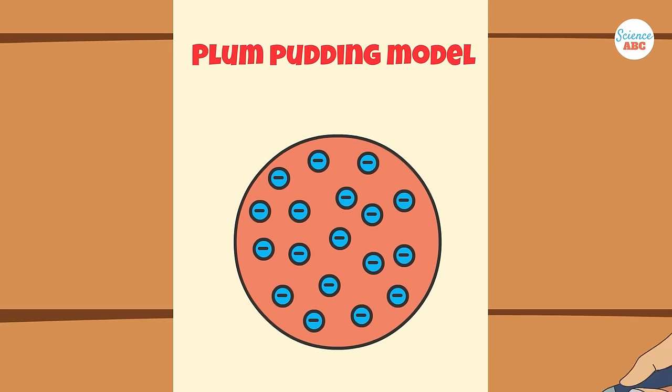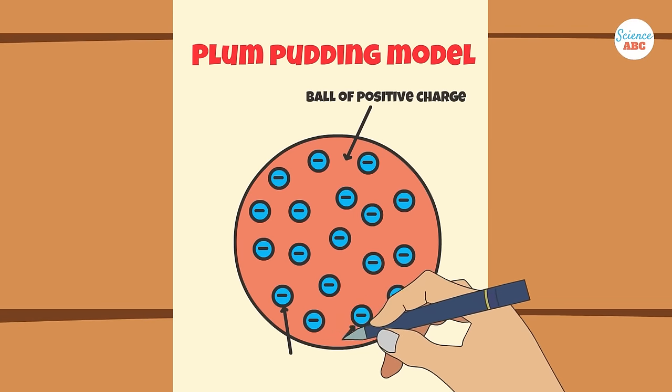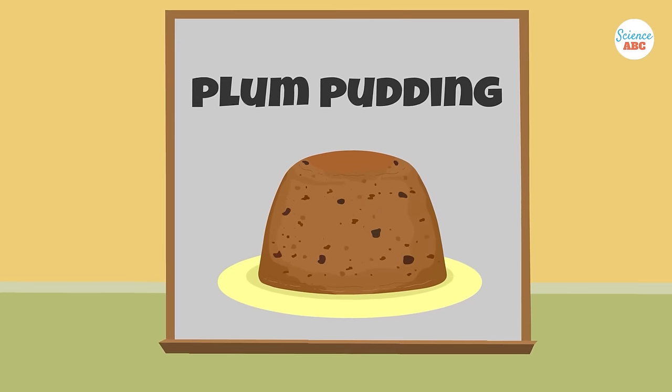This model characterizes an atom as a particle that is composed of a positively charged mass, the pudding, as well as tiny negative charges embedded in it, like plums.